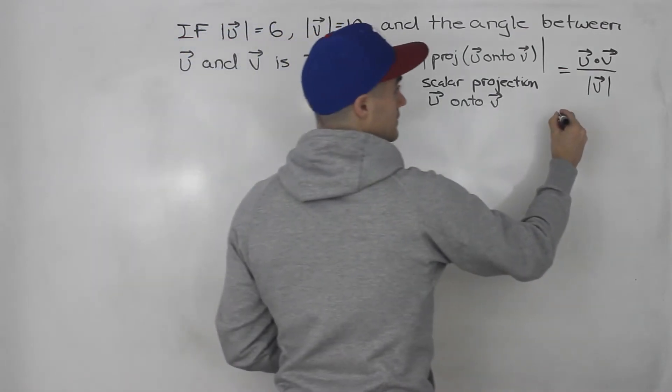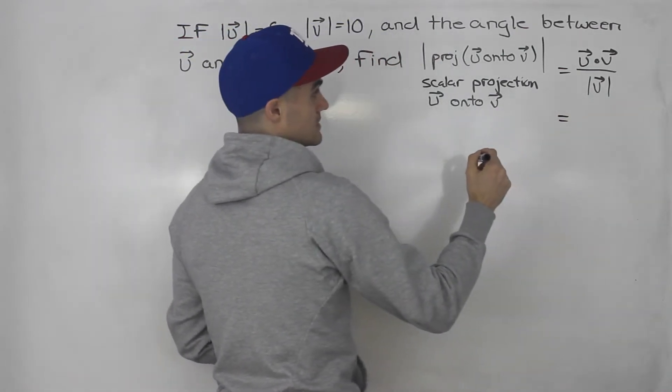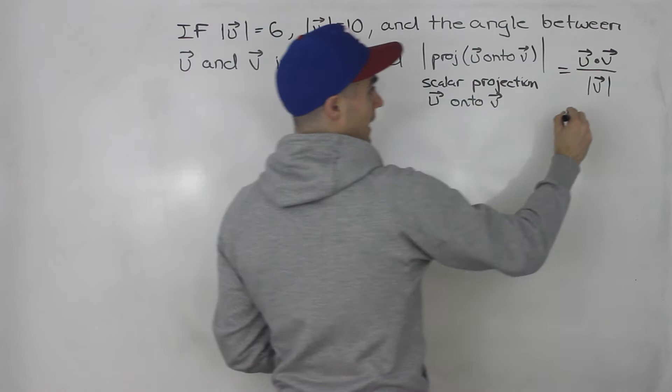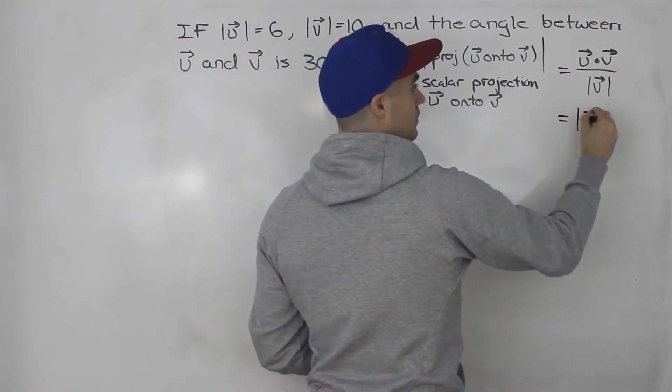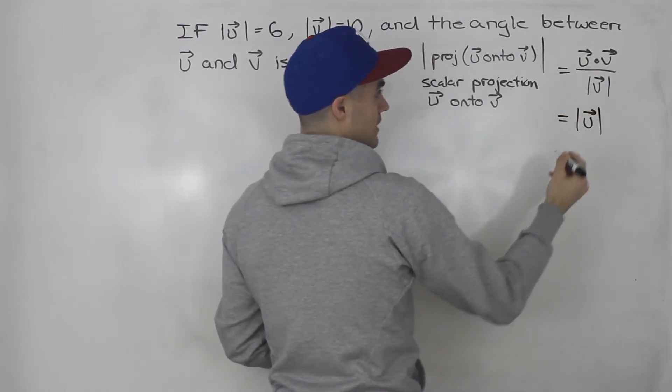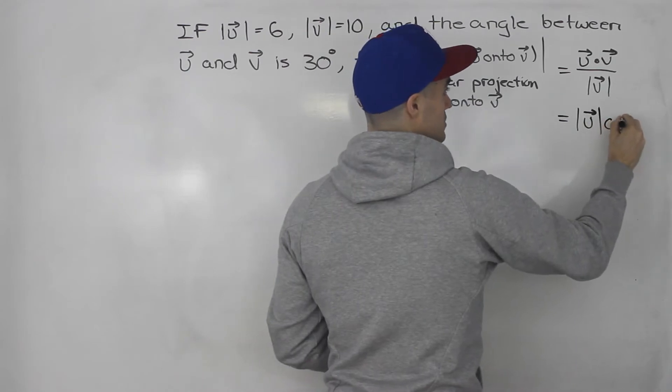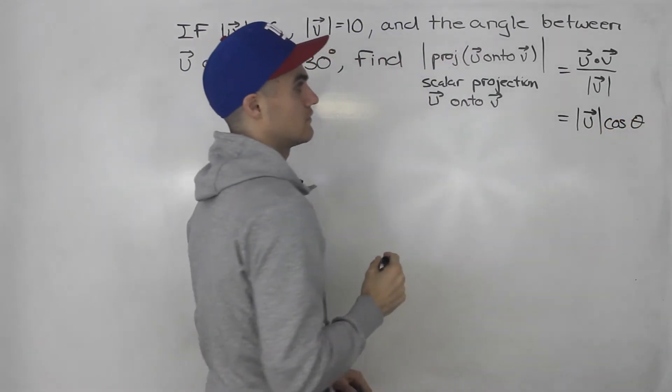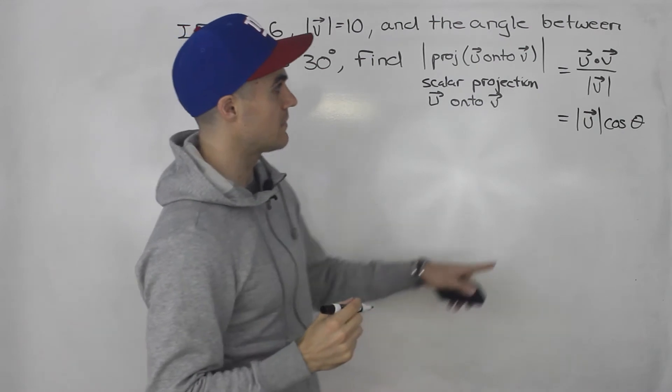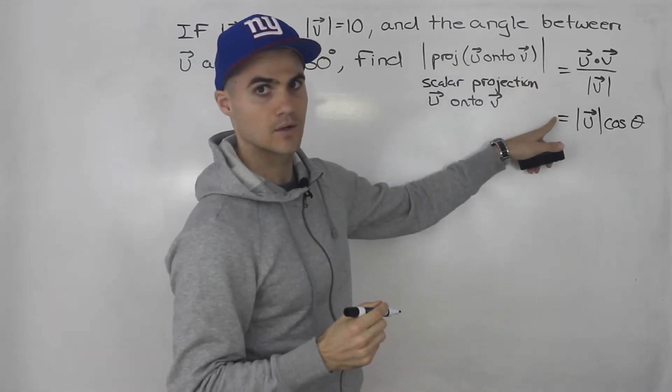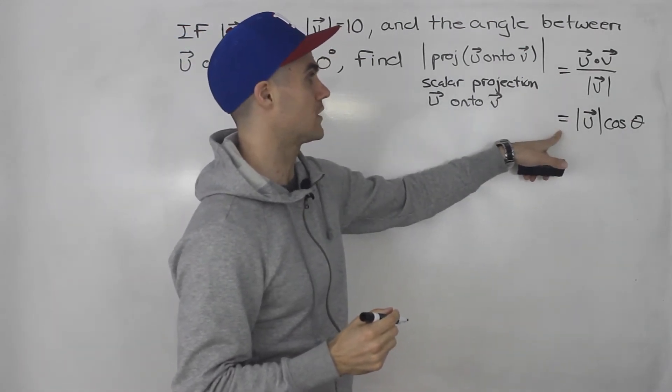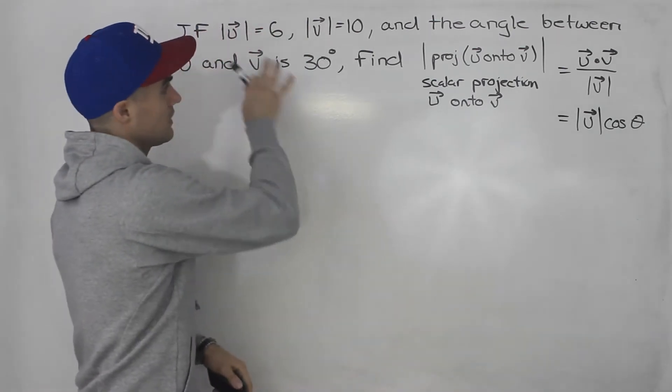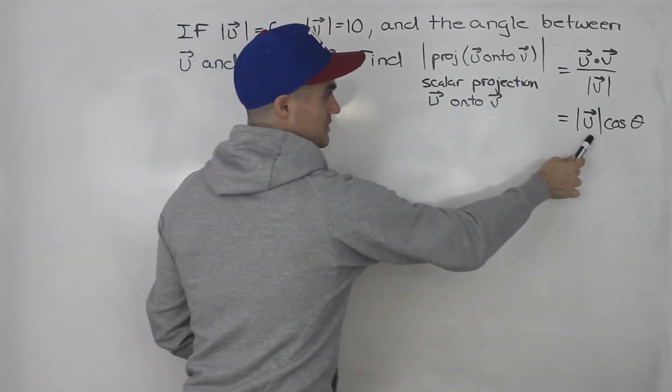Now another way to get it is you can take the magnitude of u and just multiply it by cos of the angle between the vectors. So depending on what you're given in the question, you can use either formula. And notice with what we're given here, we're going to be using this formula.